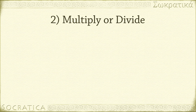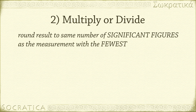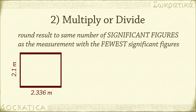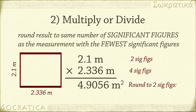When you multiply or divide, you round the result to the same number of significant figures as the measurement with the fewest significant figures. For example, to find the area of a rectangle: 2.1 meters × 2.336 meters = 4.9056 meters squared. Rounded to 2 sig figs — because there are 2 sig figs in 2.1 — you get 4.9 meters squared. This implies you used different measuring instruments with different precision for each side of the rectangle.